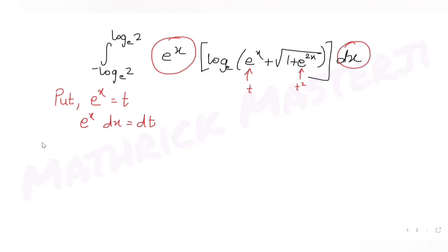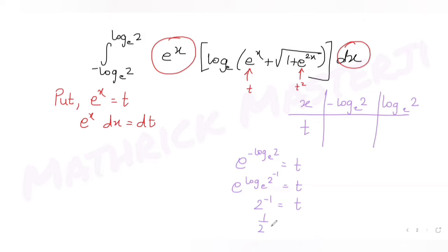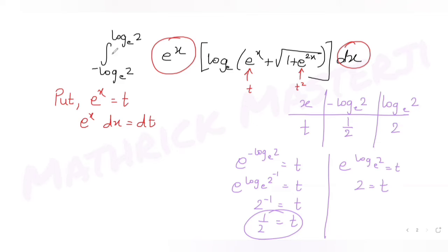Now I convert the limits. For the lower limit: e^(−log 2 base e) = e^(log 2 base e)^(−1) = 2^(−1) = 1/2. For the upper limit: e^(log 2 base e) = 2. So the new limits for the integral in terms of t are from 1/2 to 2.